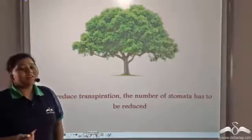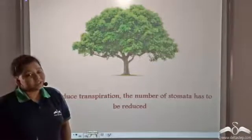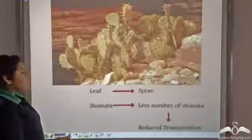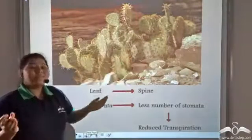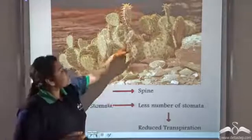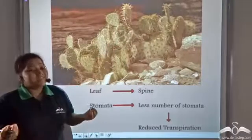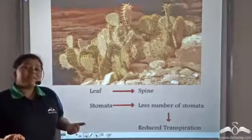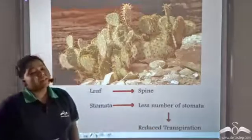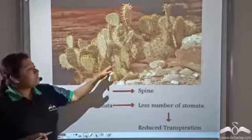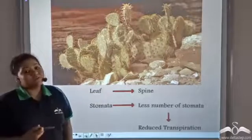First of all, to reduce the rate of transpiration, the number of stomata has to be reduced. For that, xerophytic plants present in the deserts reduce their leaves into needle-like spines. If the leaf size decreases then there will be fewer stomata, so there will be reduced transpiration in these plants and maximum water will be retained in their body.